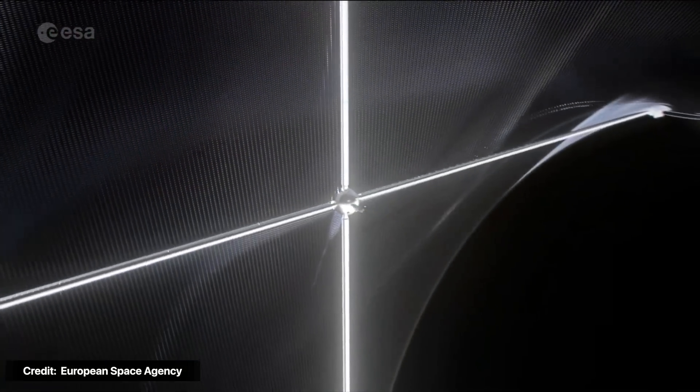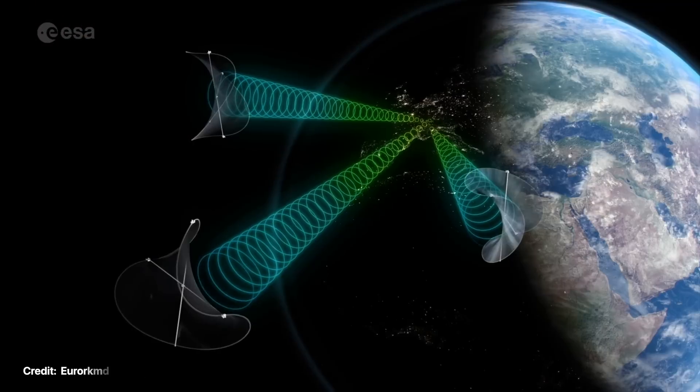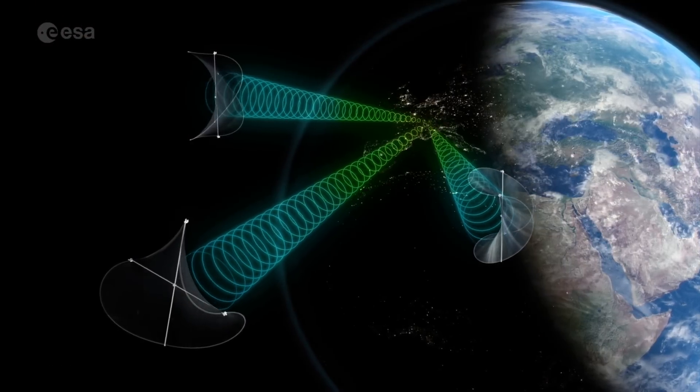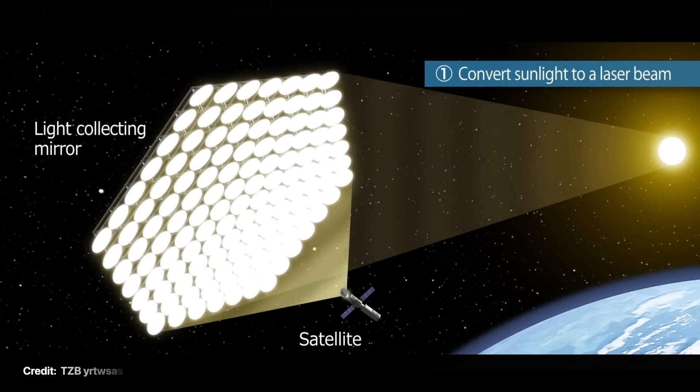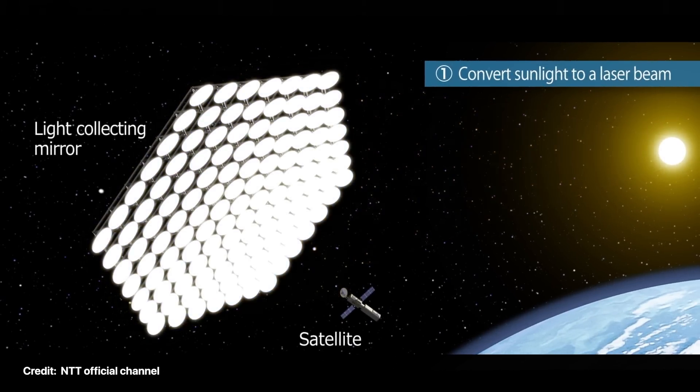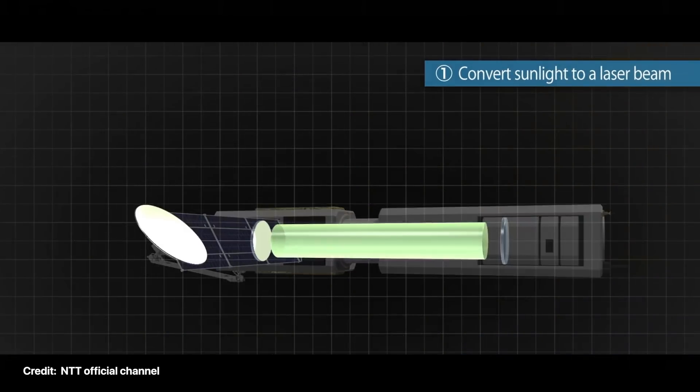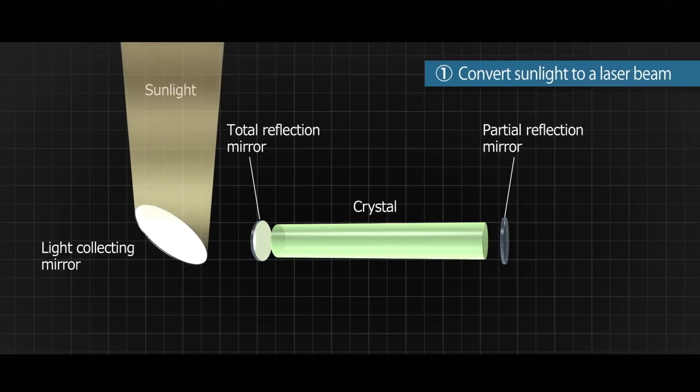While other companies pursuing space-based solar power, like the European Space Agency, plan on using very efficient multi-junction photovoltaic solar panels that convert the sunlight into electricity, NTT has a different idea. Their design doesn't use PV panels, but instead an array of mirrors that concentrate light like a thermal solar power plant.